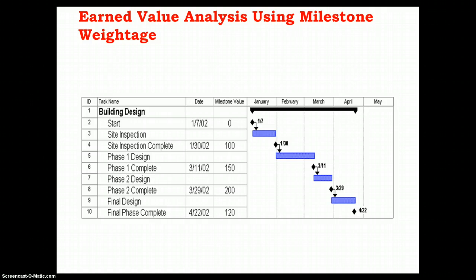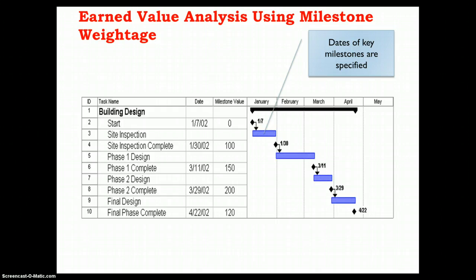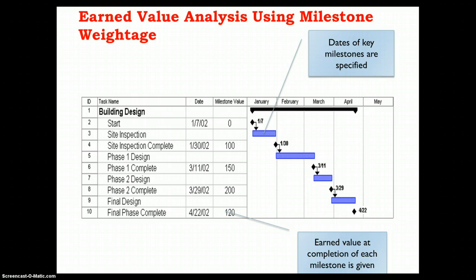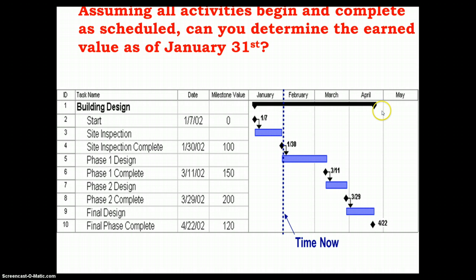Here is an example to understand earned value analysis using the milestone method. The dates of key milestones are specified, indicated by diamonds on the schedule. The first milestone is the start of the project, the second is site inspection completion on January 30th, phase 1 completion on November 3rd, and phase 2 completion by March 29th. The earned value at completion of each milestone is shown in the corresponding column. The first activity has no earned value, the second has $100,000, and phase 1 completion has an earned value of $150,000.